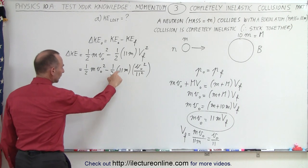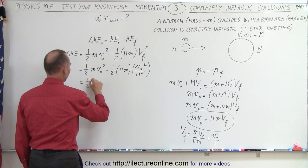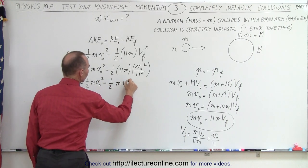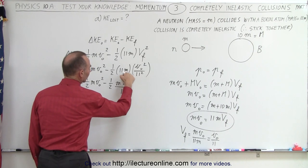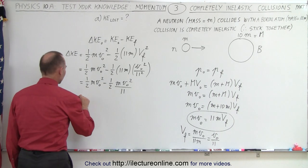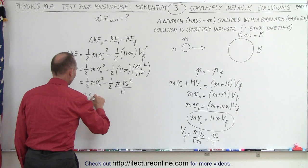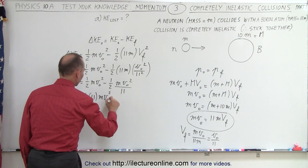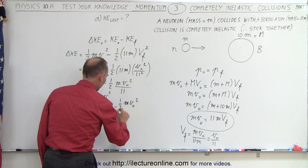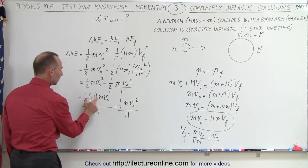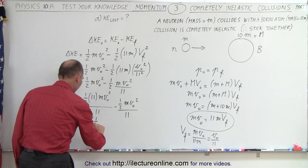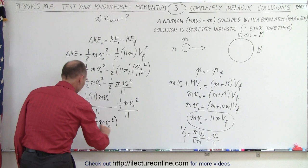First of all, I'm going to simplify this. So this can be written as 1 half mv initial squared minus 1 half times mv initial squared divided by 11, no longer squared because that canceled out. But now I need to write that over a common denominator. So I'm going to write this as 1 half times 11 mv initial squared over 11 minus 1 half mv initial squared over 11. So I have 11 of these minus one of those. That gives me 10 of those. So this is equal to 10 times 1 half mv initial squared divided by 11.